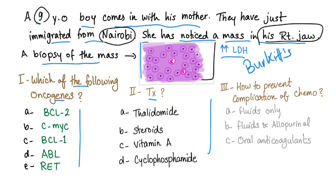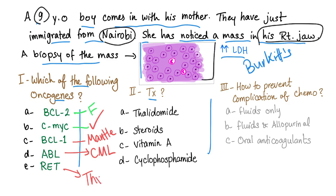Which of the following oncogenes? How about BCL2? BCL2 is for follicular lymphoma. How about C-MYC? C-MYC is the correct answer in Burkitt's lymphoma. How about BCL1? This is mantle cell lymphoma. How about ABL? ABL was CML. How about the RET oncogene? It's involved in thyroid cancer. Which type of thyroid cancer? Please let me know down below in the comments. Also, there is an adrenal disease where RET is involved — if you know the answer, let me know in the comments.